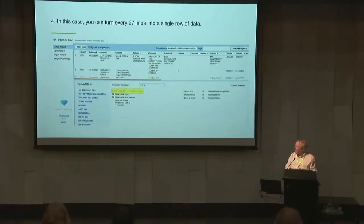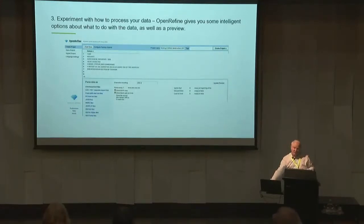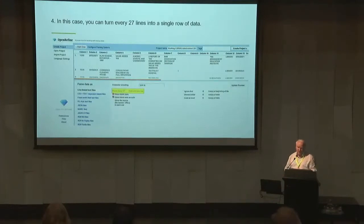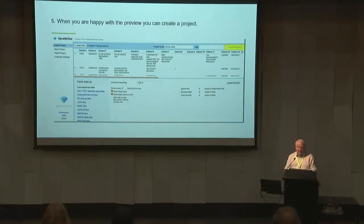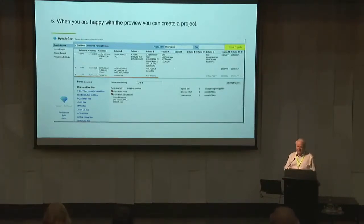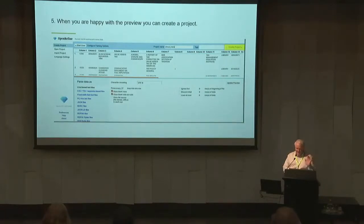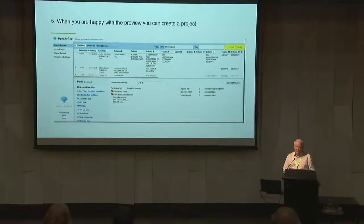You could tell it that the data repeats every 27 lines, and it turns it into nice columns. You then say yep, that's what I want to do, and you create a project. What happens is it doesn't alter your source data — it puts it into OpenRefine and it's totally separate, so you're not touching your original data source. I've started with a spreadsheet, fiddled around, saved it, and overwritten the last one before — but you don't need SharePoint or version control here. Everything you do in OpenRefine you can undo, or you can replay it if you want to go the other way as well.